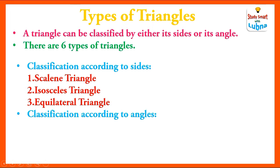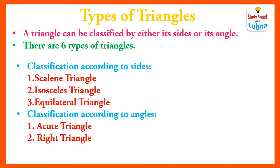Now the classification of triangles according to their angles: number one, acute triangle; number two, right triangle; and number three, obtuse triangle. So all these three triangles are classified according to their angles.